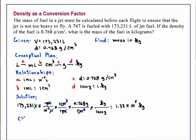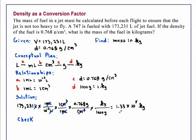As always, we want to check to make sure that our answer is logical. The units are correct. And the order of magnitude of the mass, 10 to the fifth kilograms, is the same as that of the volume, which can be written as 1.73231 times 10 to the fifth liters. Since the density is fairly close to 1, the mass in kilograms should be comparable to the volume in liters, and it is. So 1.33 times 10 to the fifth kilograms is the correct answer.